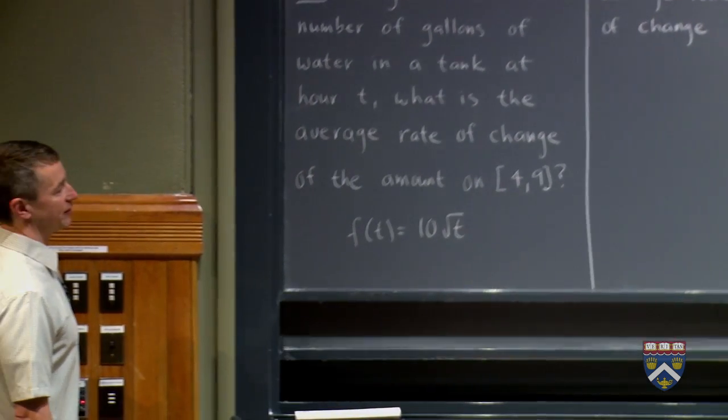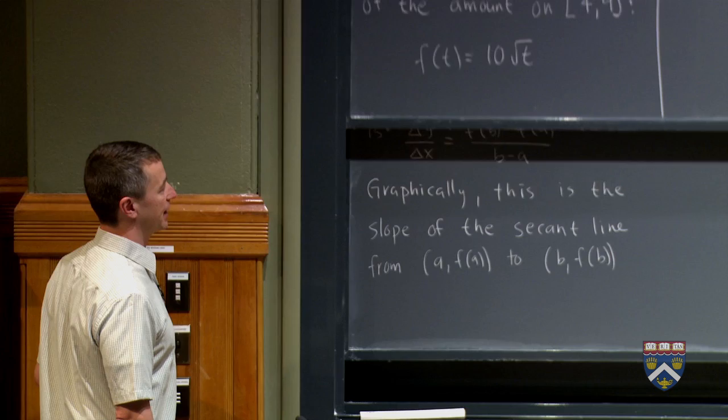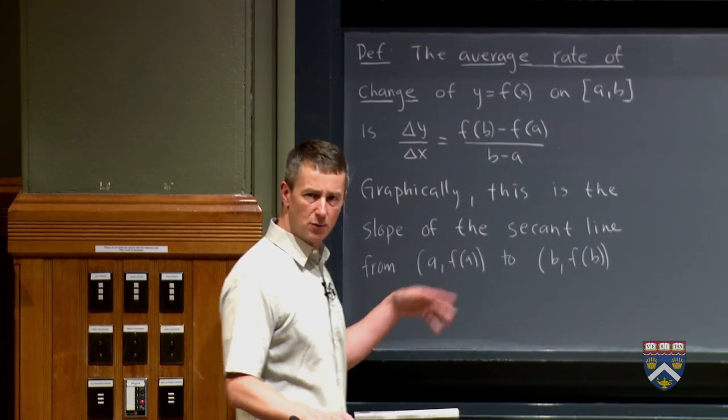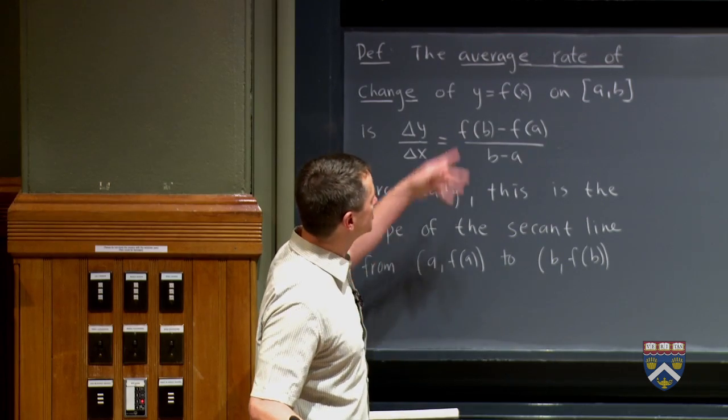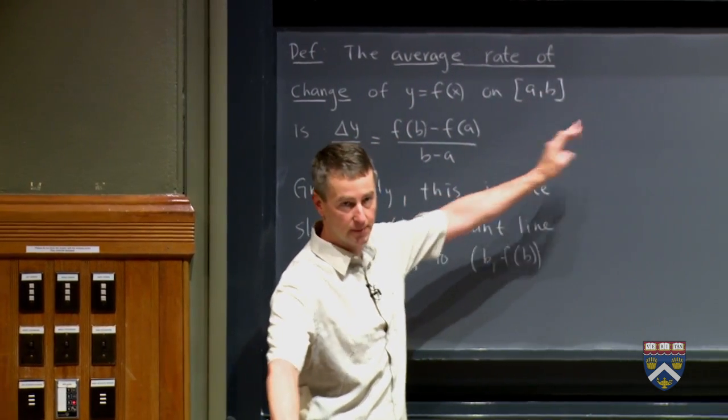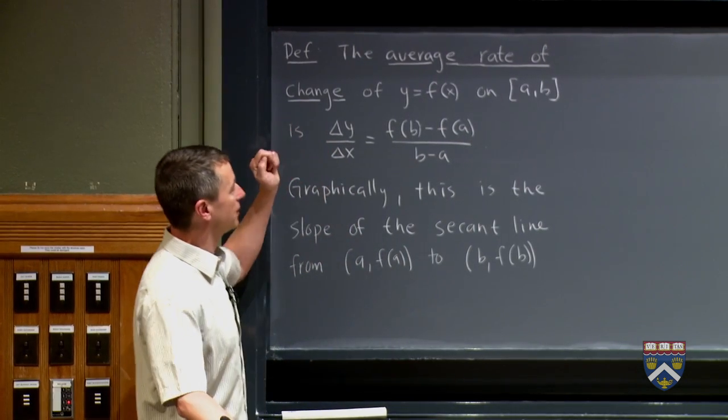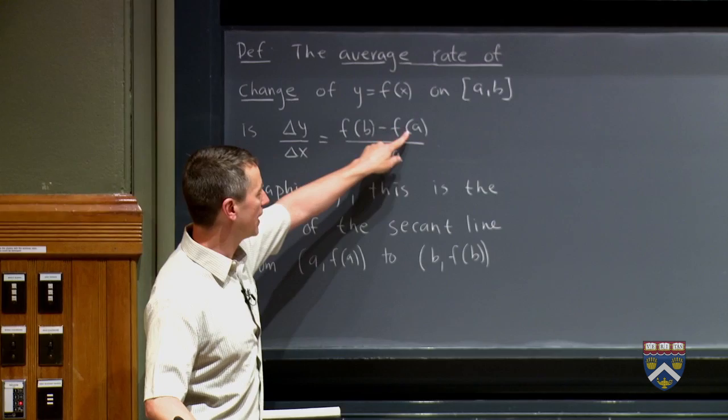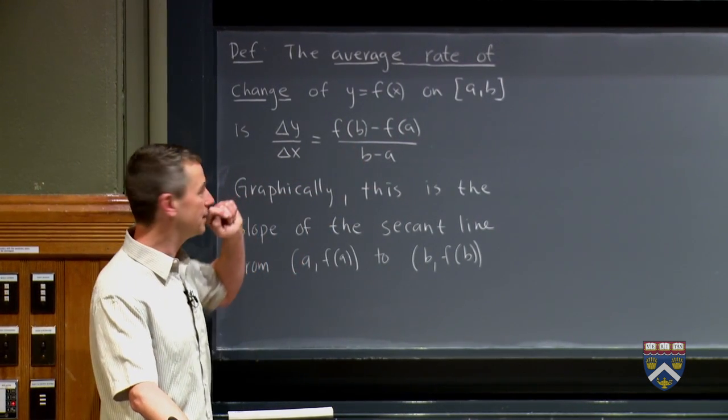Now that we've done that, we want to just formally define what our average rate of change is for any old function. We're just going to use what we did over there. So the average rate of change of any old function y equals f of x on any old interval from a to b is what we just did over there. Change in y over change in x, which is like saying y2 minus y1 over x2 minus x1.